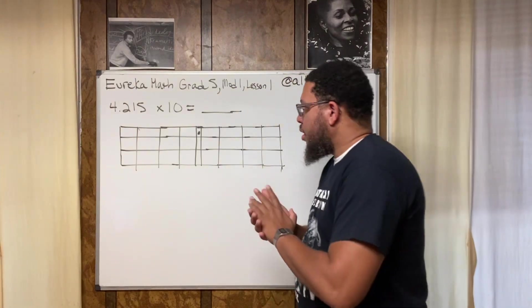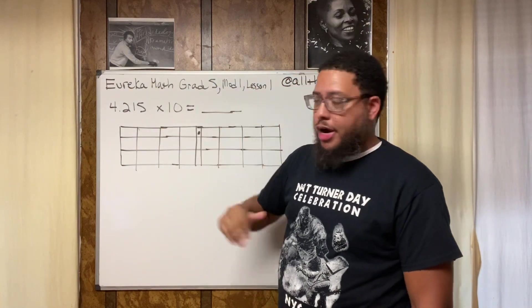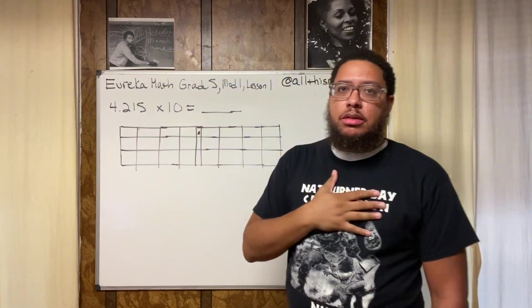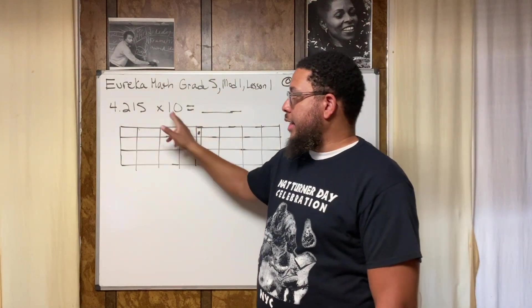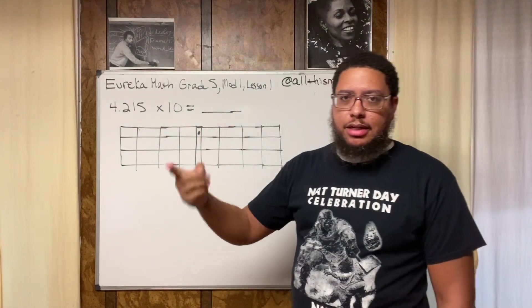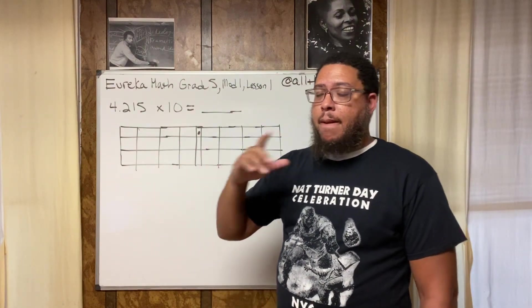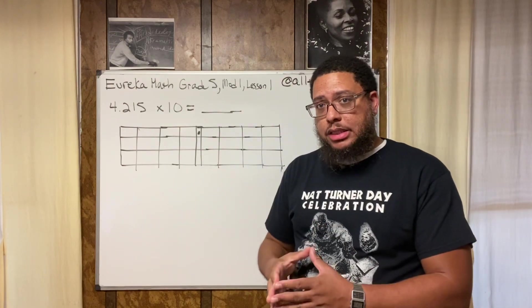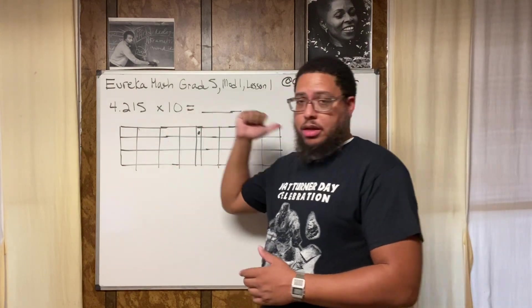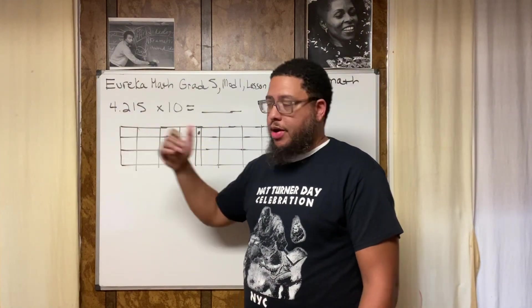Case in point: they want you to multiply 4.215 times 10. Now back in my day, my teachers taught me the shortcut that whenever you're multiplying by 10 or a base of 10, or like 10, 100, 1,000, 100,000, whatever, all you got to do is move decimal points. If you're doing multiplication you move the decimal point to the right. If you're doing division the number gets smaller so you move the decimal point to the left.